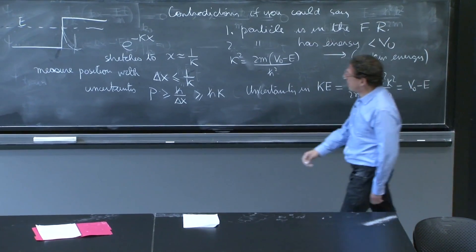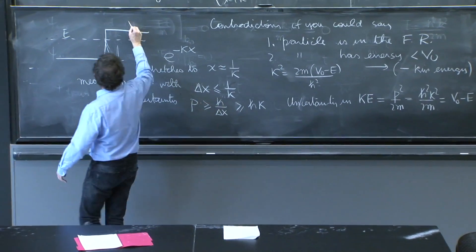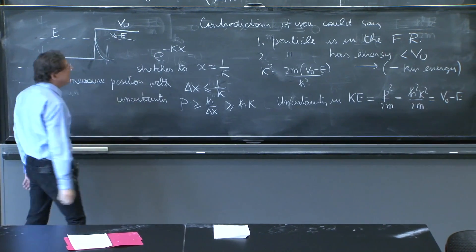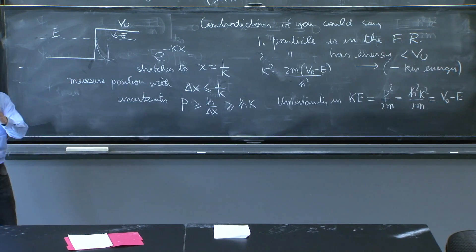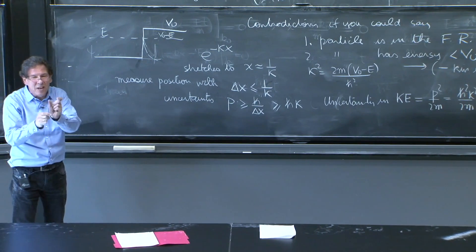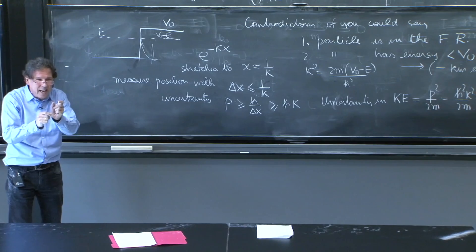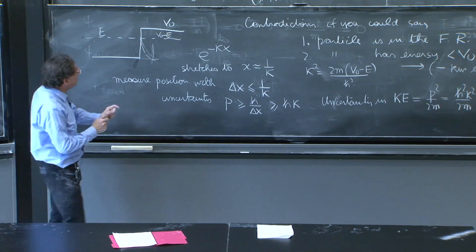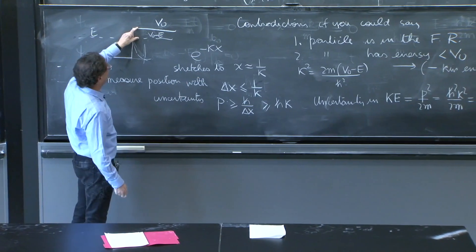So actually, if you think about it, here is V₀. This difference is V₀ - E. And you're going to say, 'Oh, I found the particle, it has negative kinetic energy.' But no, the uncertainty principle says: you found it localized? OK. Your kinetic energy now has an uncertainty. How much? V₀ - E.